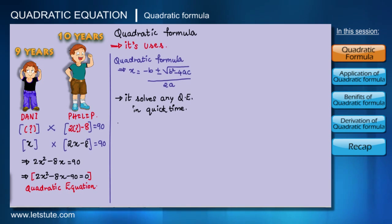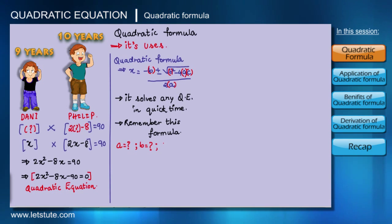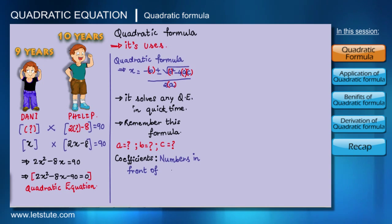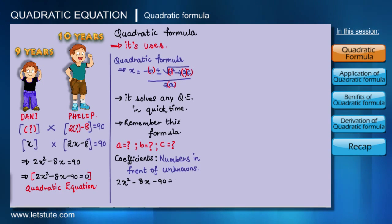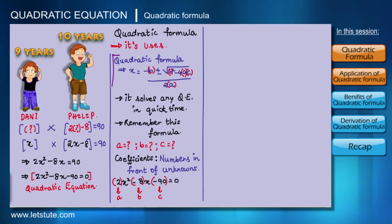The good thing is that this quadratic formula can solve every single quadratic equation very quickly. It just looks complicated, but we have to remember it for quick answers. The letters a, b, and c are simply the coefficients — the numbers in front of the unknowns. In the equation 2x² minus 8x minus 90 equals 0, the coefficient of x² is 2, so a equals 2; the coefficient of x is minus 8, so b equals minus 8; and the constant minus 90 is taken as c.